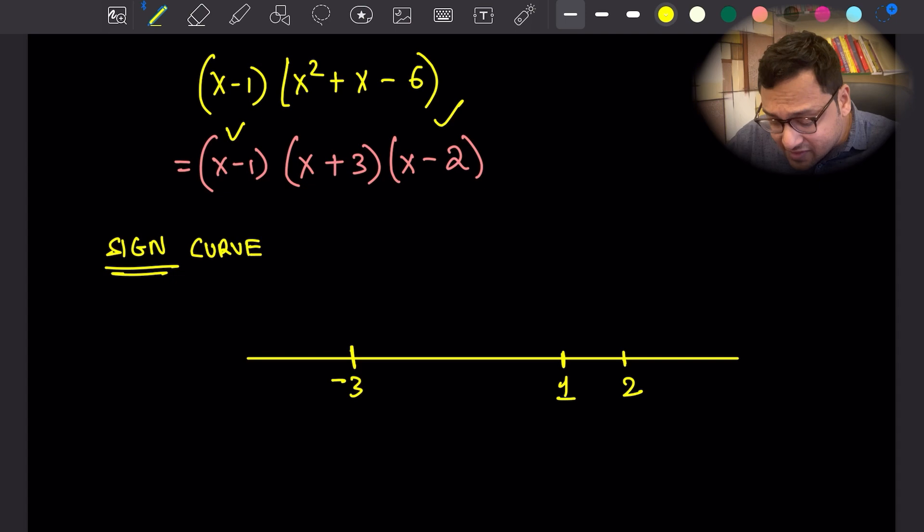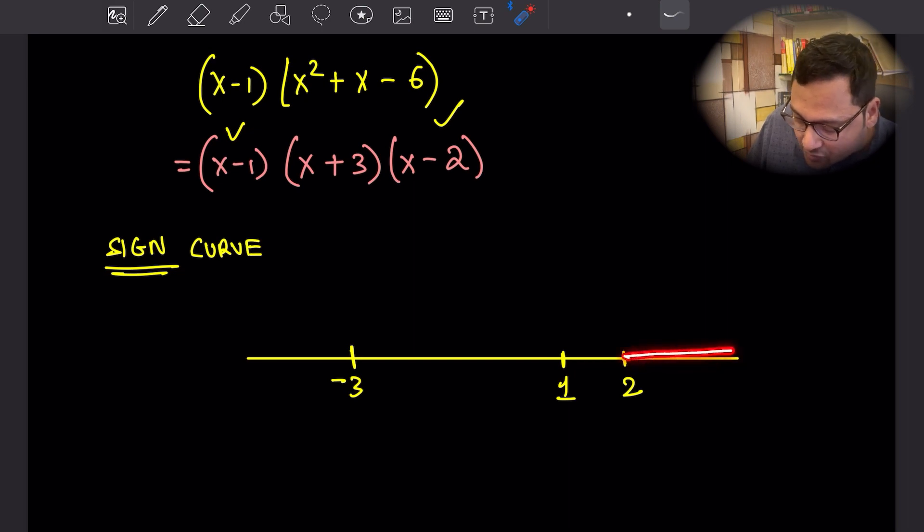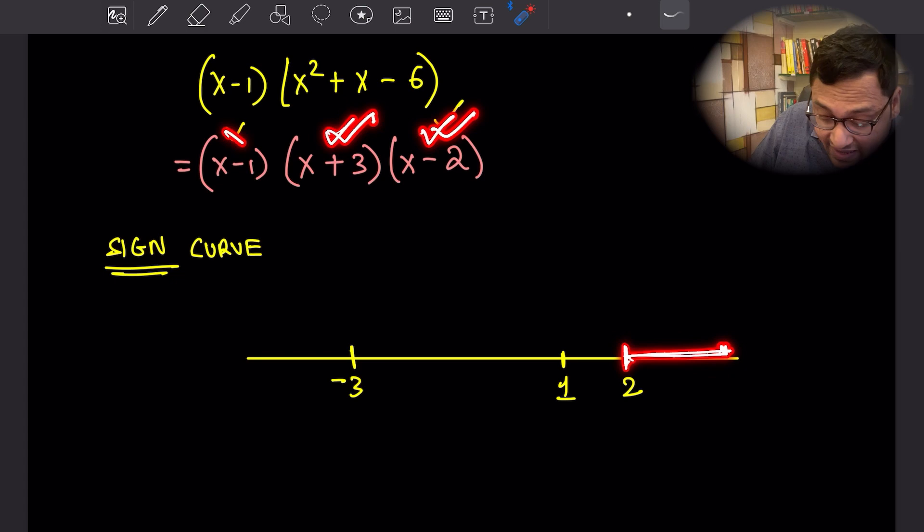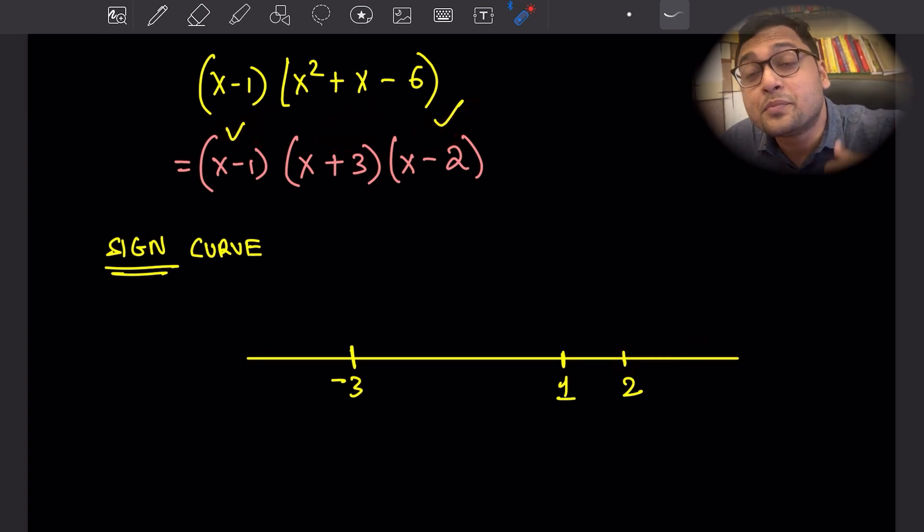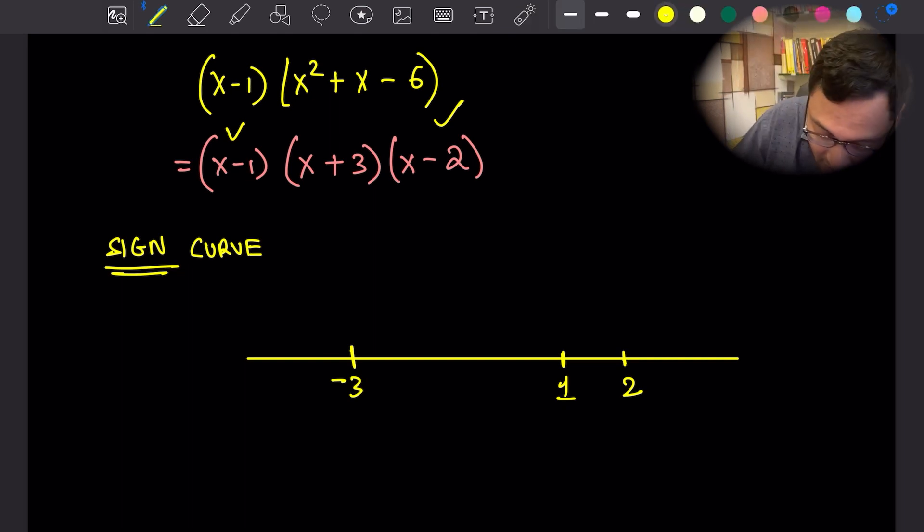First think about this. What happens if x is in this region? That is, x is greater than two. If x is greater than two, x minus two will be positive, x plus three will be positive, all three of the factors will be positive. So their product will be positive. The entire expression is positive.